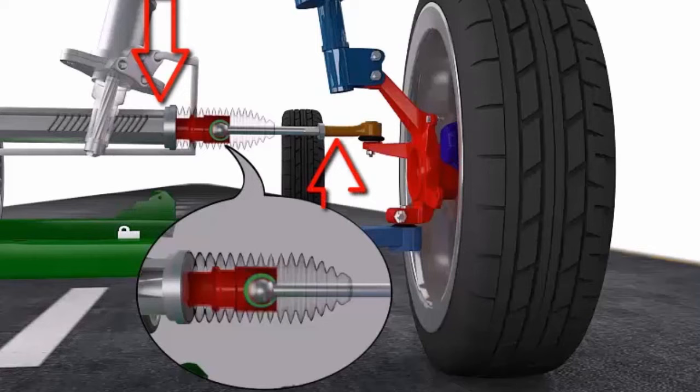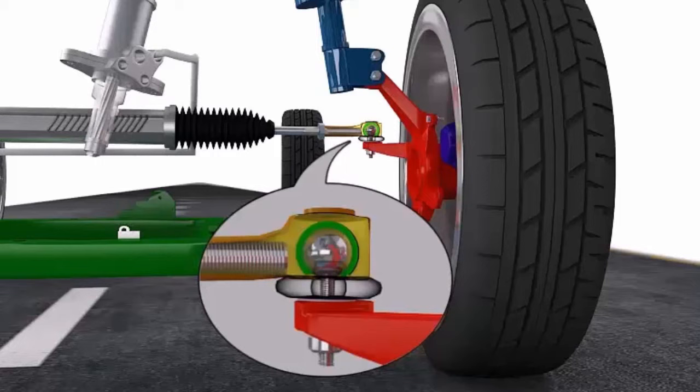The outer tie rod end also has a ball joint that is connected to the steering knuckle.